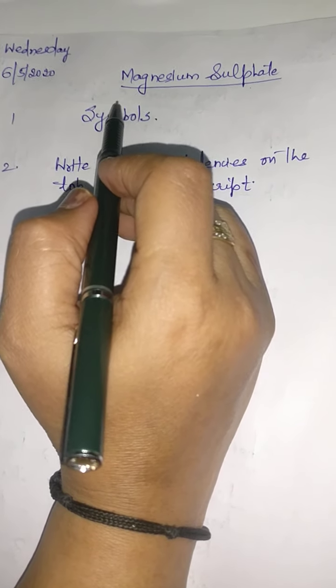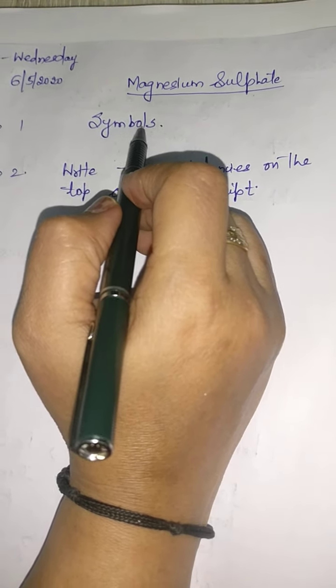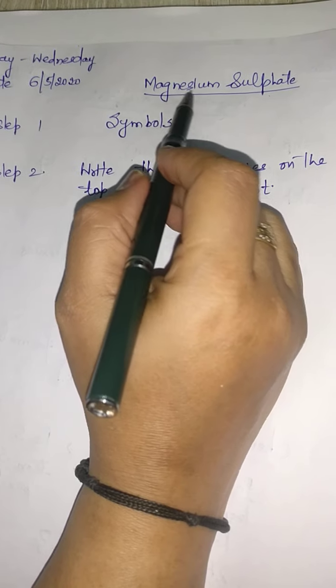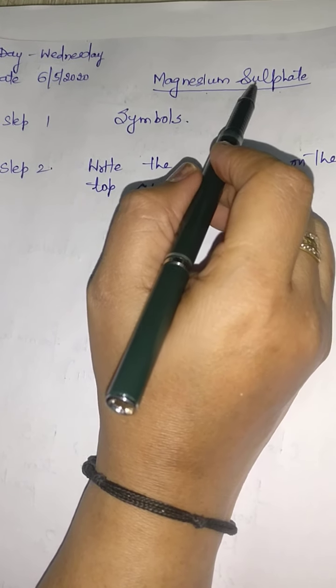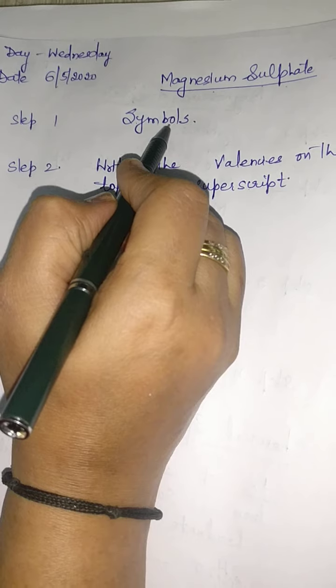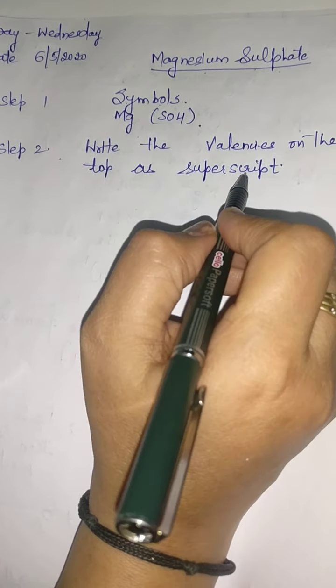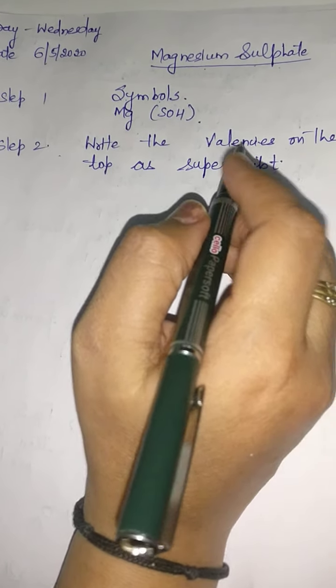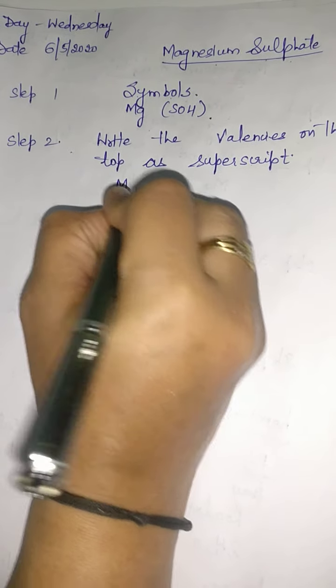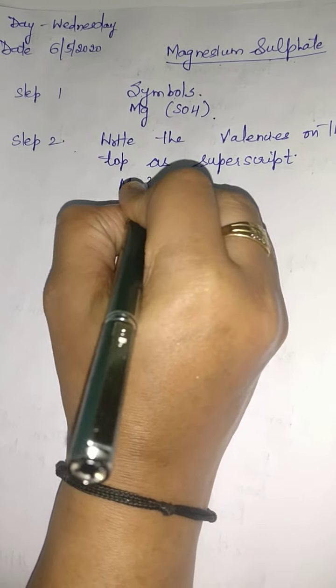We will write the symbols of elements of which it is made up of. In step 1 we will write the symbols. The symbol of magnesium is Mg and for sulfate it is SO4. In step 2, write the valencies on the top as superscript — that means we will write the valencies.